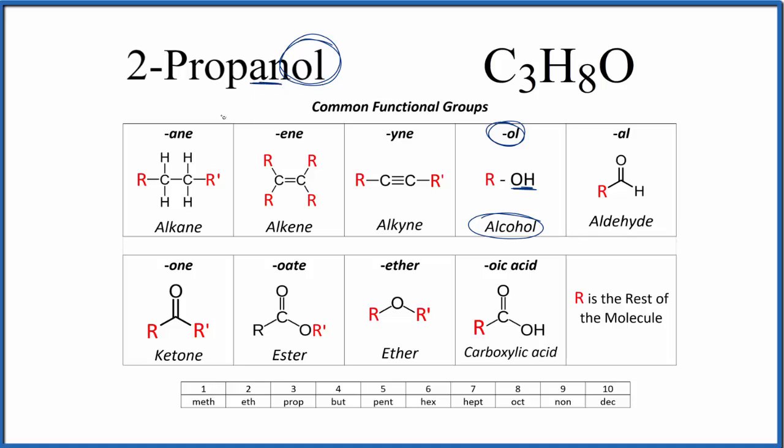That tells us we're going to have just single bonds. So that's helpful. And then prop, that means three. So we're gonna have three carbons, which we kind of already knew.